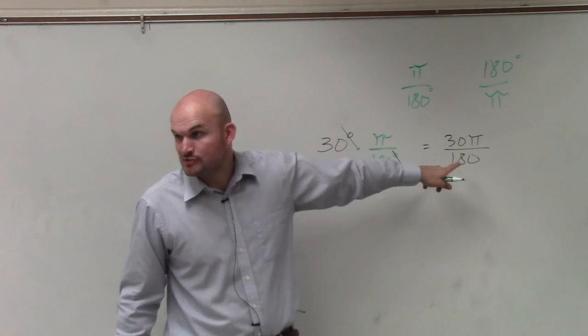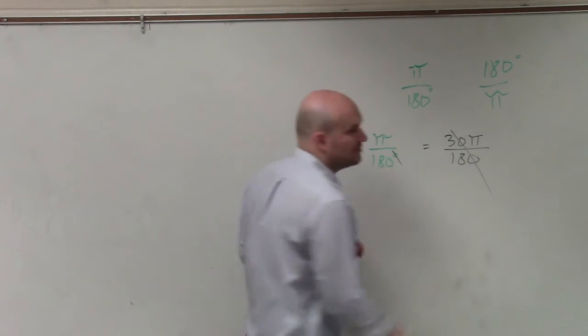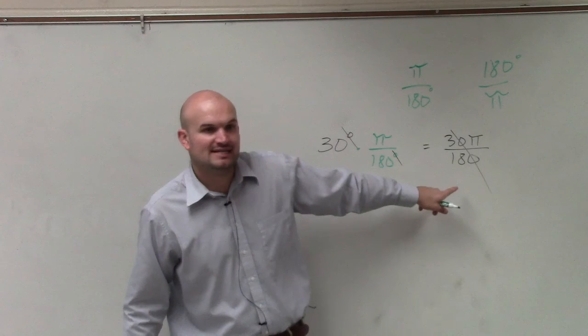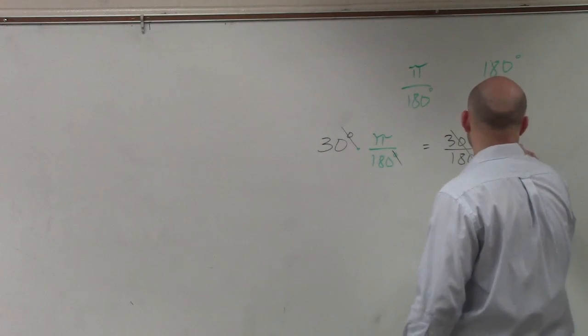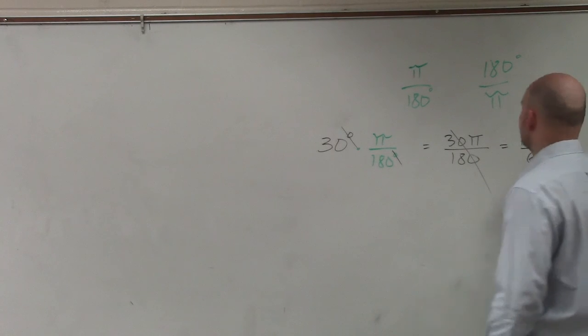Now, I just have to reduce my fraction. Well, the zeros, we don't really need those. 3 over 18 is going to be 1 over 6. So in reality, this reduces to 1 times pi over 6.